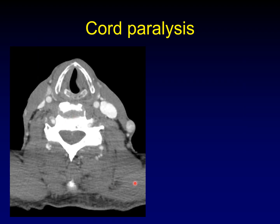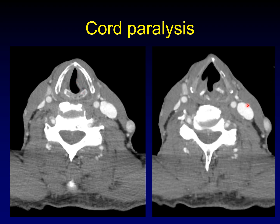Vocal cord paralysis is an important secondary sign — medialization of a cord suggests cord paralysis. You've got to double-check that it is truly medialization of the arytenoid cartilage, not just the vocalis muscle. You've got to see that the arytenoid cartilage has fallen in medially — it's not perched out laterally as on the contralateral side. It's fallen in, pulling the true vocal cord along with it. You can also see that this vocal cord has already started to atrophy, so this isn't an acute paralysis.